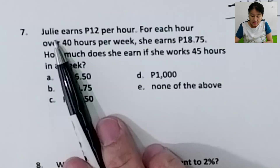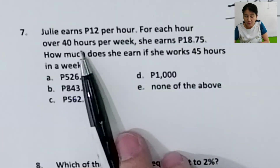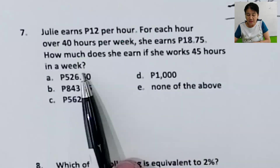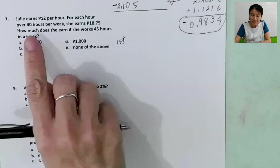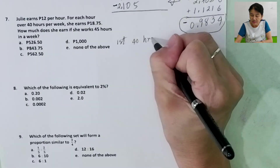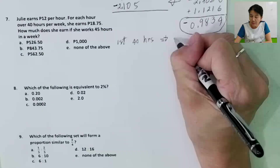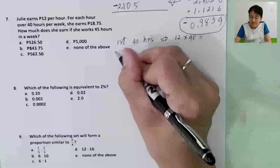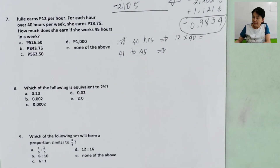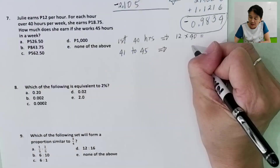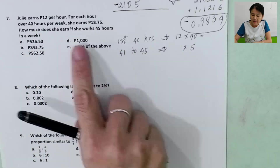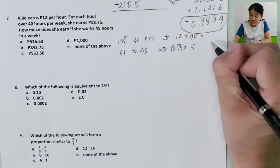Problem number 7. Julie earns 12 pesos per hour. For each hour over 40 hours per week, she earns 18.75. How much does she earn if she works 45 hours in a week? We have to split the 45 hours. For the first 40 hours she earns 12 pesos times 40. From hour 41 to 45 — counting 41, 42, 43, 44, 45 — there are 5 hours. For those hours over 40, she earns 18.75 per hour.